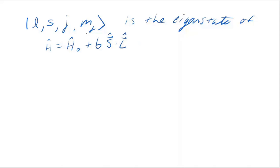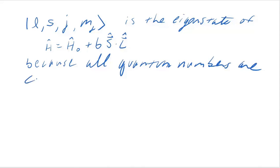And I can say that's an eigenstate of this Hamiltonian because all four of these quantum numbers are conserved under this Hamiltonian. And they're good quantum numbers.